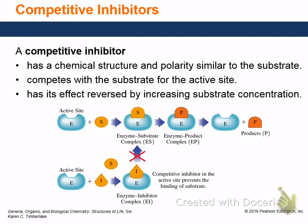Competitive inhibitors look like the substrate and compete by binding to the active site — that's a fair game, both trying to win the same active site. You can have strong inhibitors that bind more strongly than the substrate or weak ones that bind less strongly. It wins by out-competing the substrate for the enzyme pocket, blocking it so the substrate can't come in and finish the reaction.